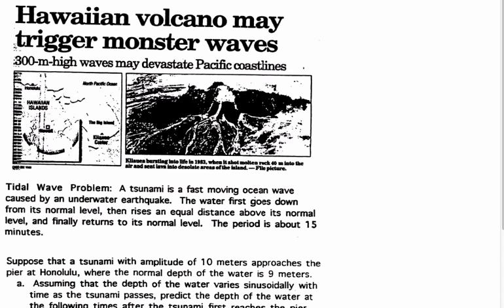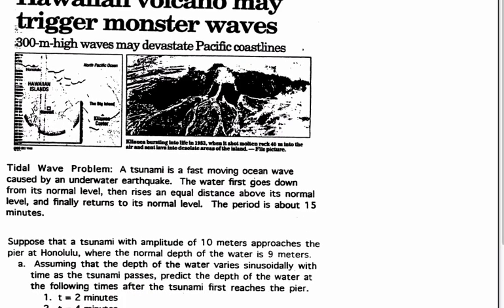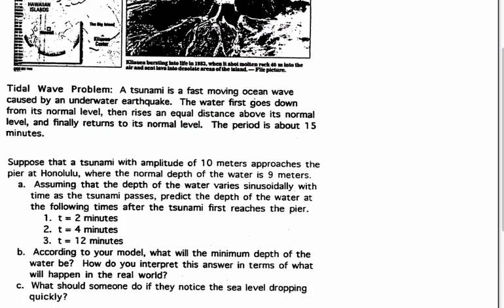Here we have a tidal wave problem. A tsunami is a fast-moving ocean wave caused by an underwater earthquake. The water first goes down from its normal level, then rises an equal distance above its normal level, and finally returns to its normal level. The period is about 15 minutes. Suppose we have a tsunami with an amplitude of 10 metres approaching the pier at Honolulu, where the normal depth of the water is 9 metres.